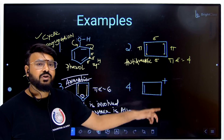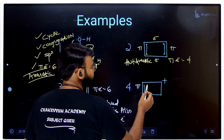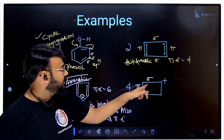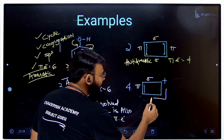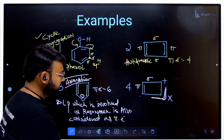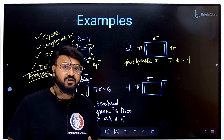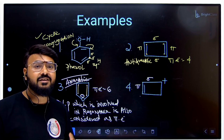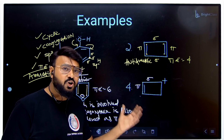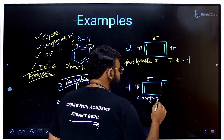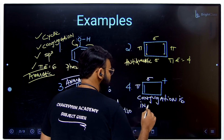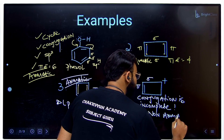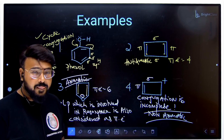The fourth example is also aromatic based on earlier analysis. Now looking at another compound: it is cyclic and sp2, but checking conjugation — pi and sigma shifts occur, but after that, resonance does not continue throughout the ring. The conjugation is incomplete. For a compound to be aromatic or anti-aromatic, the entire ring must be in conjugation. Since the conjugation is incomplete here, it is neither aromatic nor anti-aromatic — it is non-aromatic.